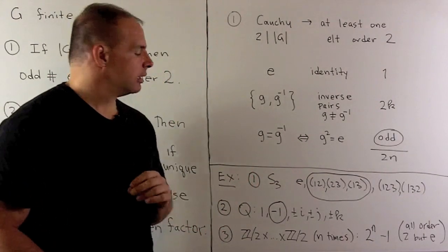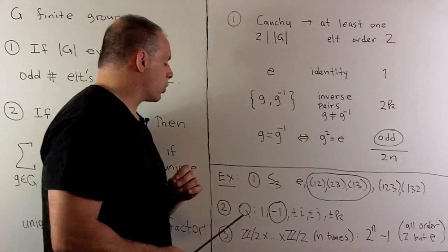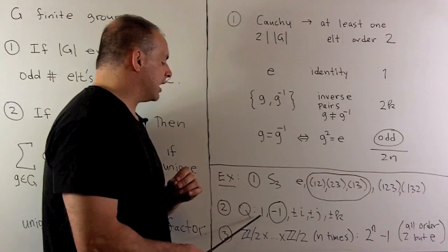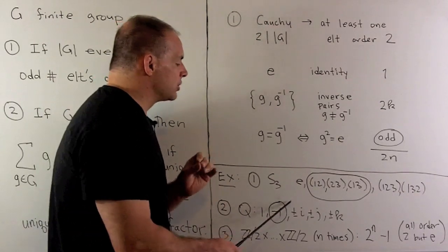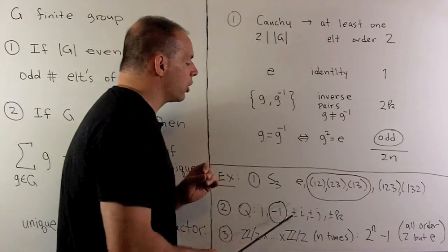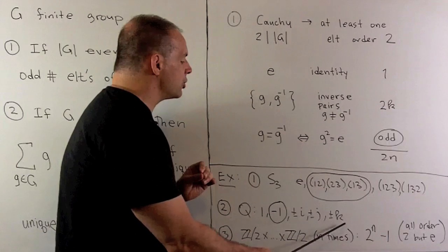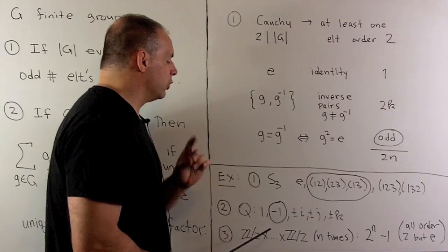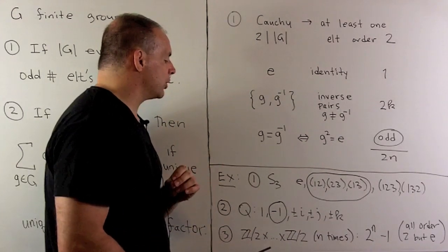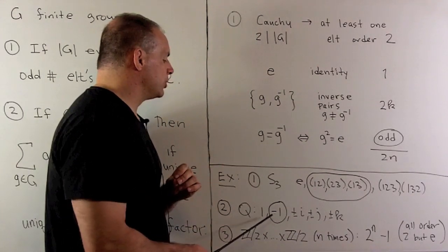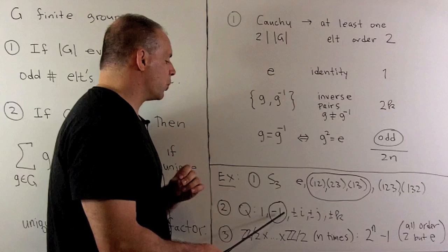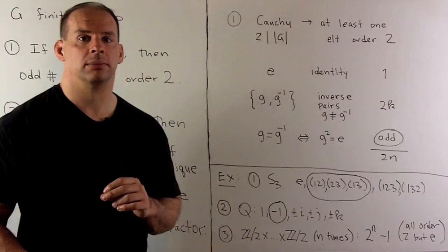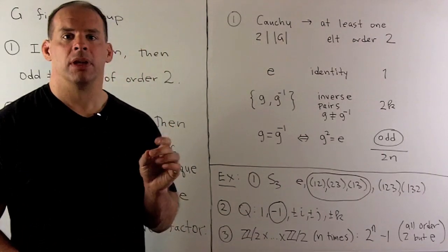Next, if I look at the quaternion group, we have the identity element. The elements of order 4 occur in inverse pairs. That leaves us with a unique element of order 2, which is minus 1.